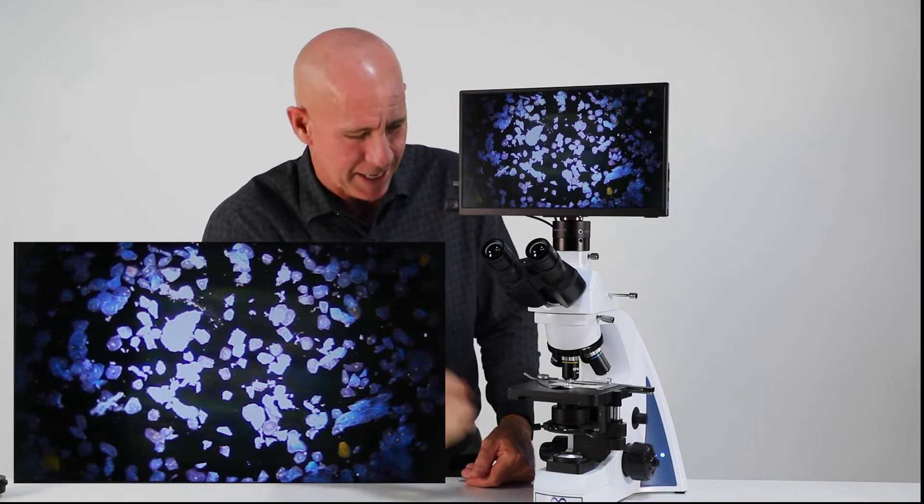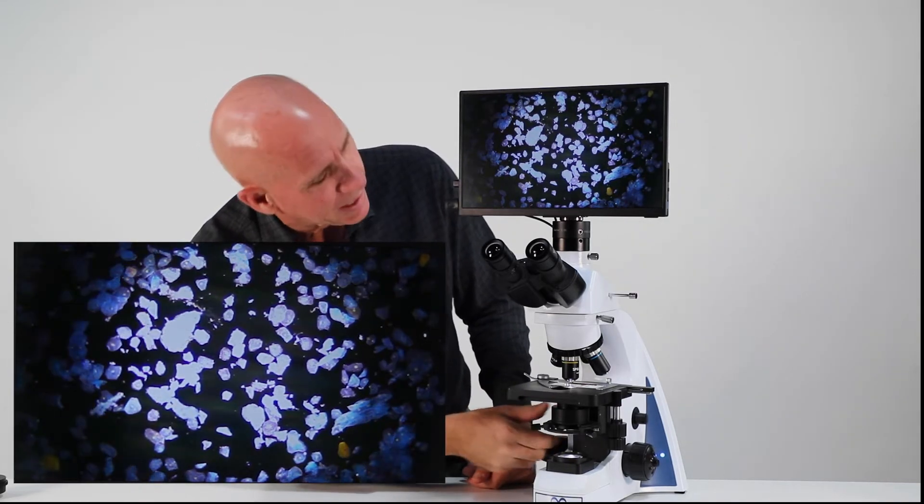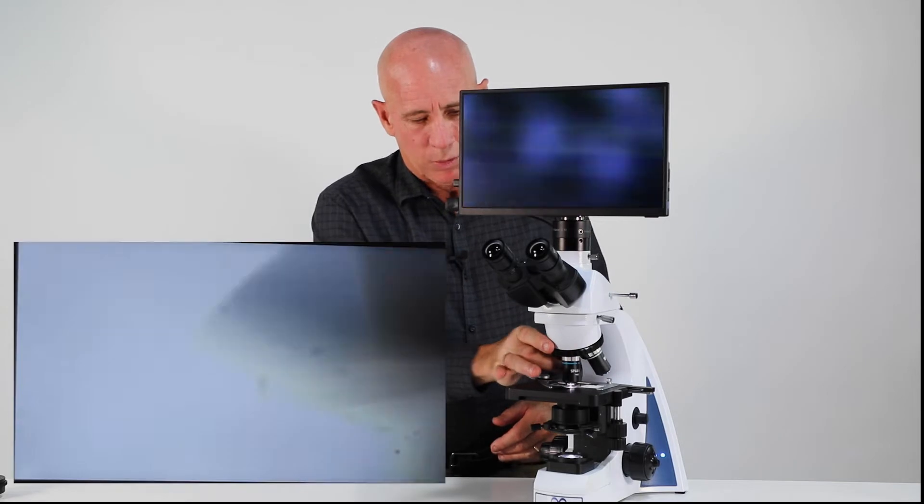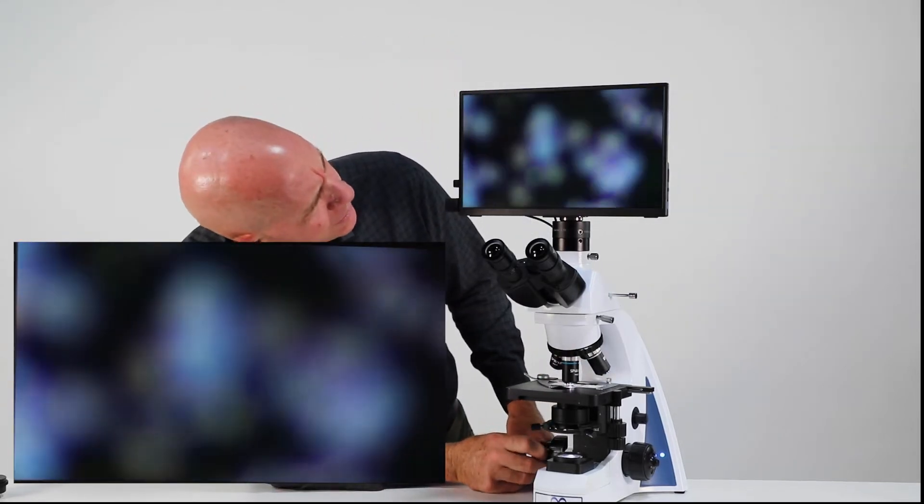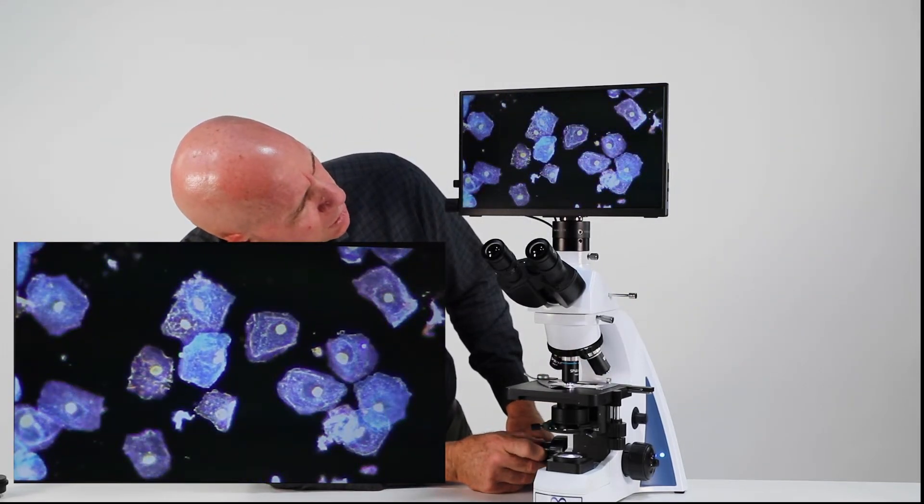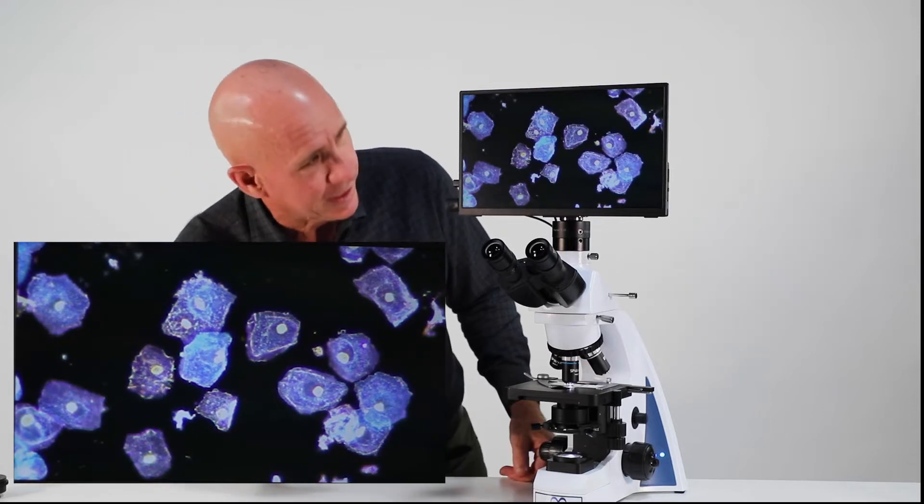You may be all the way up. You may come down just a hair and you'll find the best illumination there. Now we go to the 40X and this is where it's going to be really beautiful. These are epithelial cells here.